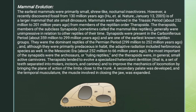From members of the reptilian order Therapsida — Therapsids, members of the subclass Synapsida, sometimes called the mammal-like reptiles, were generally unimpressive in relation to other reptiles of their time. Synapsids were present in the Carboniferous period, about 359 million to 299 million years ago, and are one of the earliest known reptilian groups. They were the dominant reptiles of the Permian period.